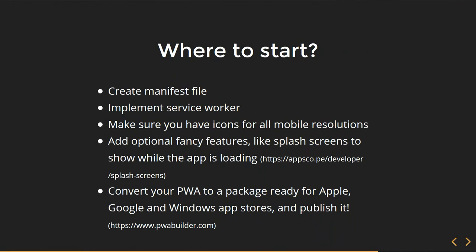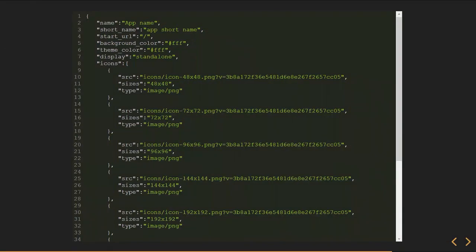Where to start with Progressive Web Apps? First, you should create a manifest file. Then you should set up a Service Worker. Make sure you have all the icons for the mobile resolutions you'd like to support. You can also add fancy features like a splash screen — so when your app is loading, you can add a nice splash screen with a background or logo of the application. And the thing I'm most excited about is that now you can actually convert your Progressive Web App to a package which you can publish to the Google, Windows, or Apple Store.